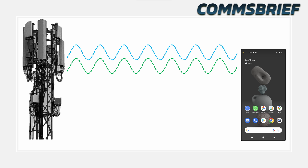You know when sometimes you're not getting a good signal on your mobile phone and you say things like 'I have poor network coverage' or 'my coverage is really bad'? Sometimes of course you describe your network coverage in words that cannot be used on this video. The point is that sometimes you don't get a good mobile phone signal.